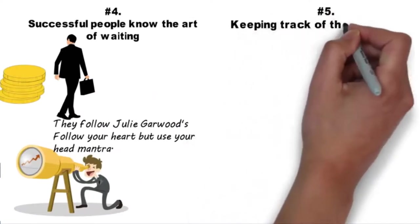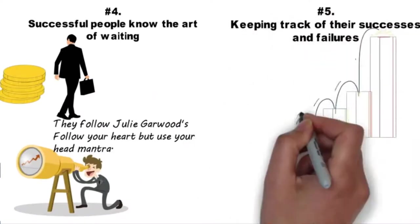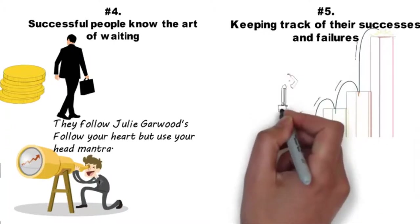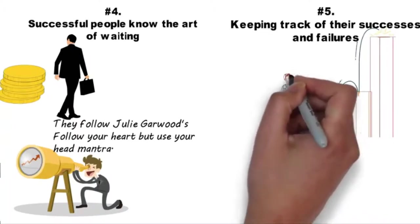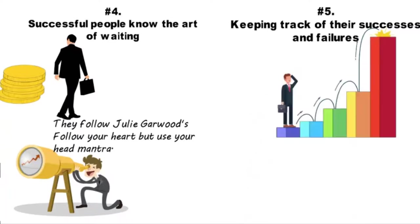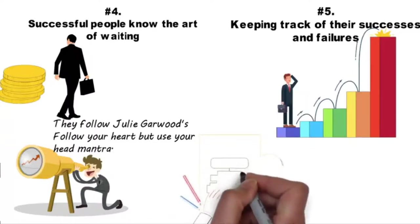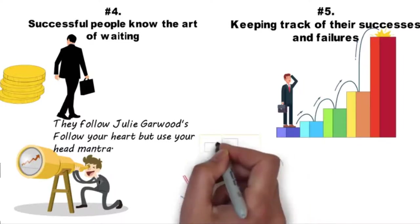Number five: Keeping track of their successes and failures. Many of the successful people don't have a hitch-free ride to their accomplishments. One thing they knew was that the next success was going to be more resounding than the present one. When a plan works out, they make more plans. When a plan fails, they pick the lessons therein and invent another plan.